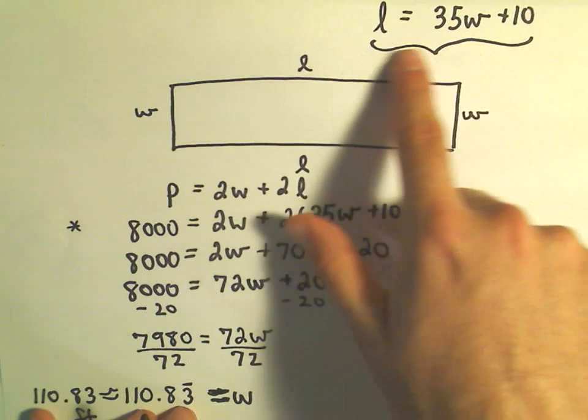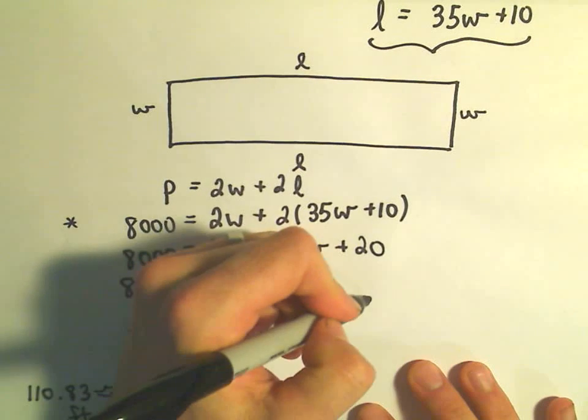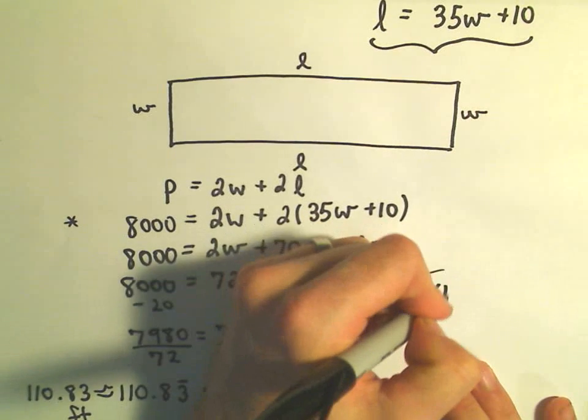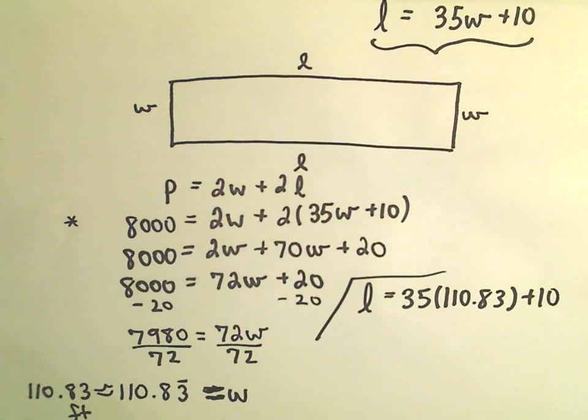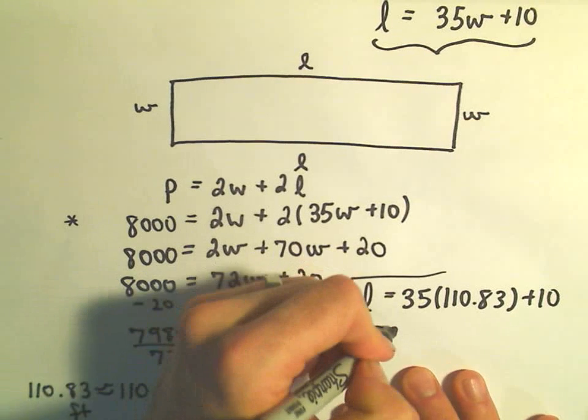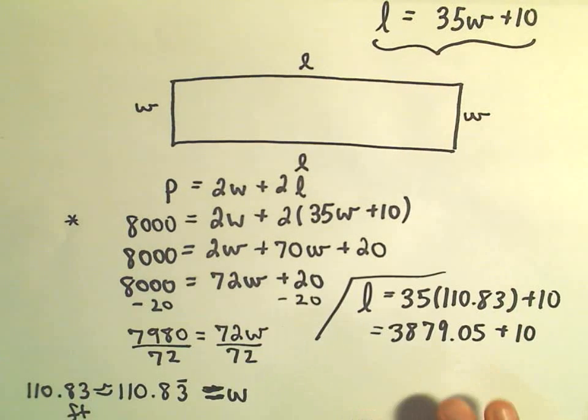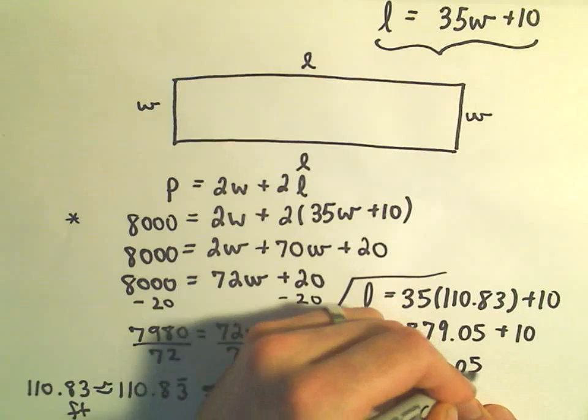And if we want to figure out the length, all we have to do is simply go back to this original equation that we came up with and simply plug in this value of 110.83 into it. So the length is going to be 35 times 110.83, again roughly, plus 10. So let me do that one real quick. 35 times 110.83, I'm getting that to be the number 3879.05. And then if we add another 10 to it, well, then we would get 3889.05.